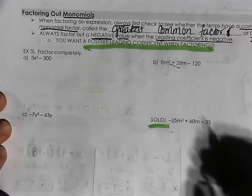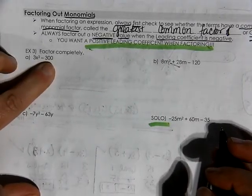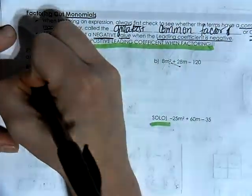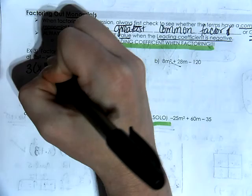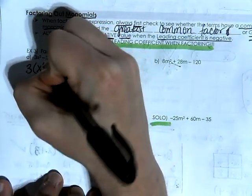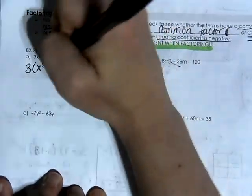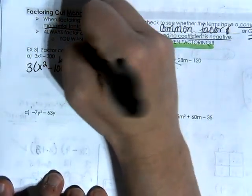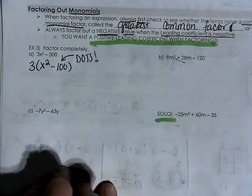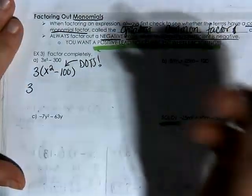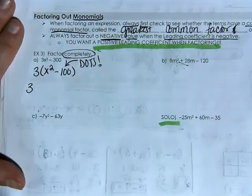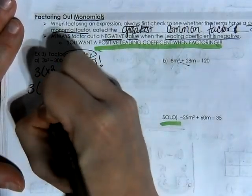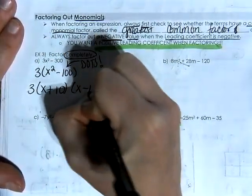Looking at 3x squared minus 300: three and 300 both have a 3 in common, so factor out a 3. The leftovers are x squared minus 100. That is a difference of two squares — two terms, both perfect squares. To factor completely, break it into x plus 10 times x minus 10. So the full factorization is 3 times (x plus 10)(x minus 10).